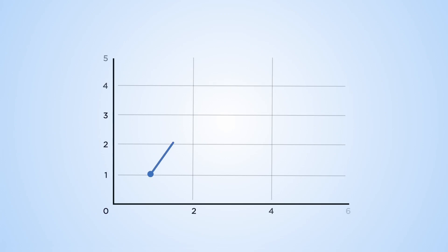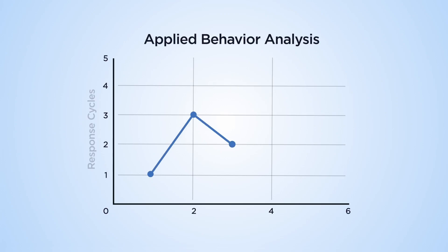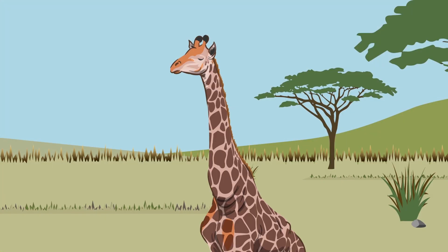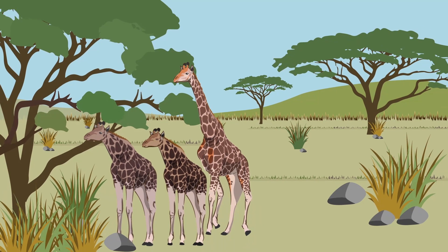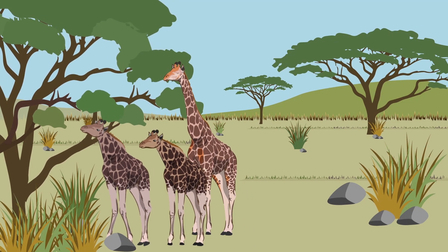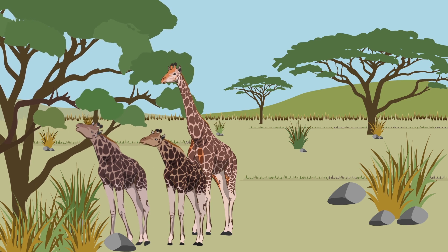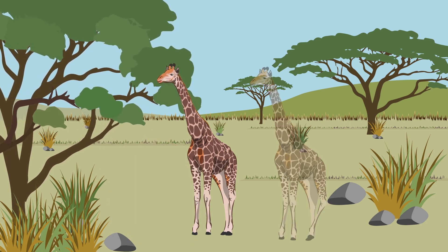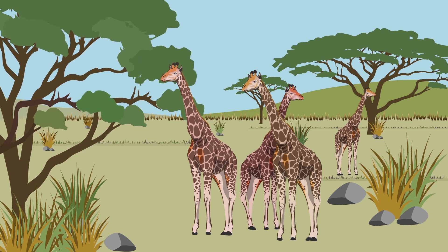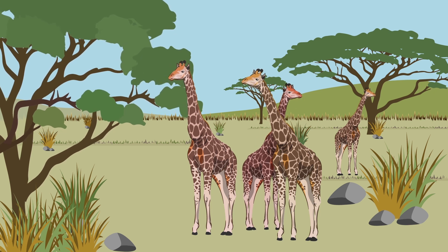To understand autistic behaviour we must first see behaviour as response populations that can change over time, just like populations of animal species. Consider the long neck of a giraffe. Giraffe ancestors had much shorter necks on average, with some variation in neck length, but even a slight advantage in neck length afforded access to food over their shorter necked peers.